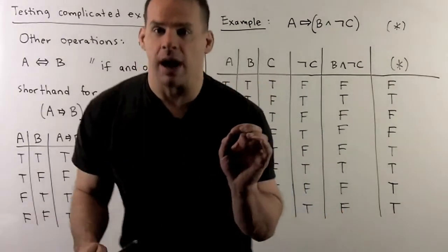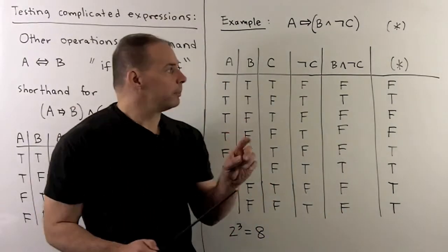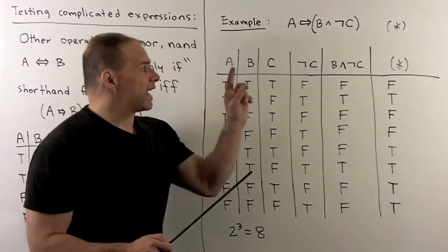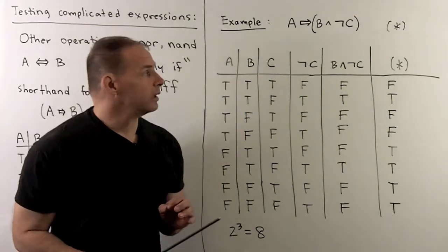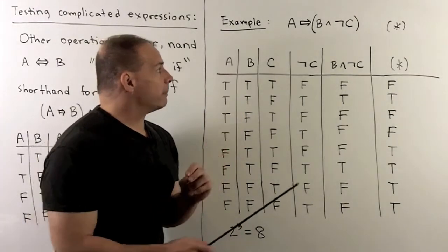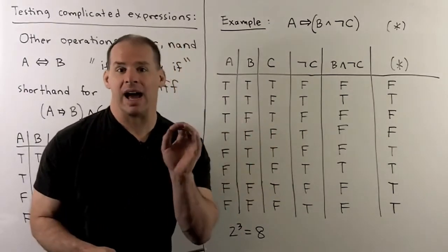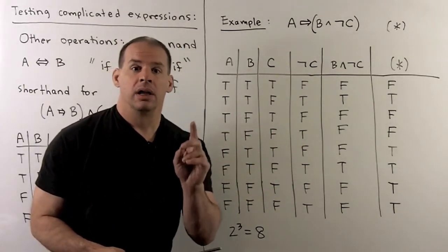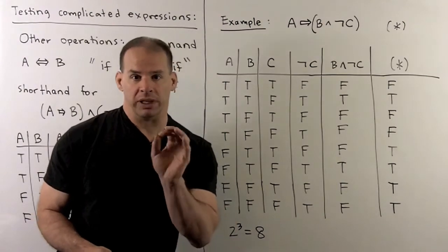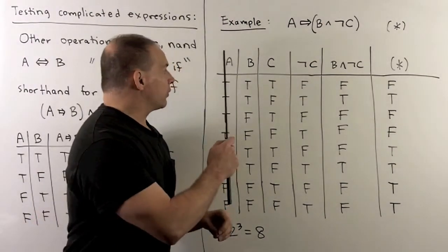Now, as a final example, let's consider the following truth table, which has three statements. So, I'm just picking at random, the statement A implies B and not C. Now, to set this up, recall, what do we do? I'll set up columns for A, B, and C.